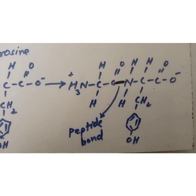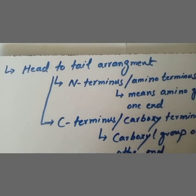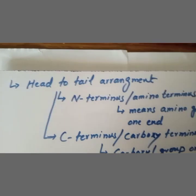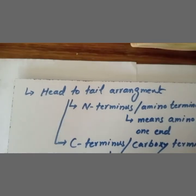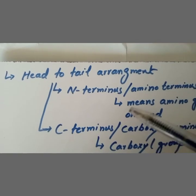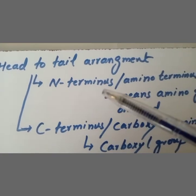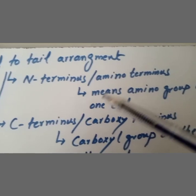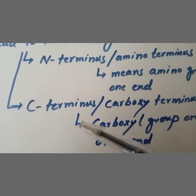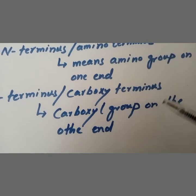One of the basic features of protein is the head-to-tail arrangement. This means there are two termini: the N-terminus, also known as the amino terminus, where the amino group is present on one end; and the C-terminus, also known as the carboxy terminus, where the carboxyl group is present on the other end.